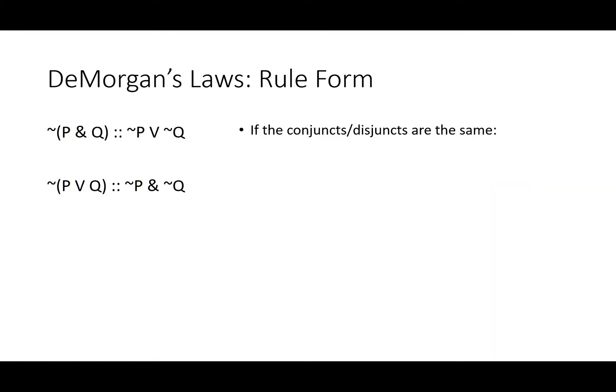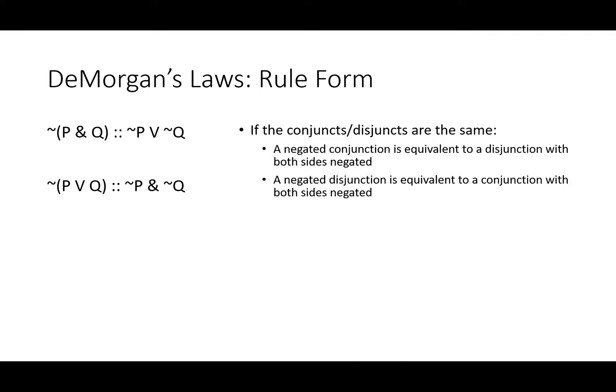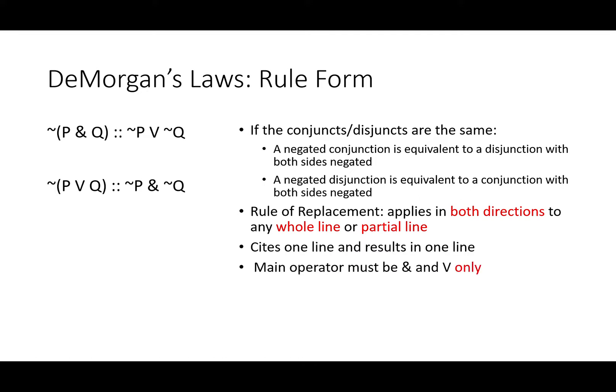These rules only work when the conjuncts or disjuncts are the same. If they are, a negated conjunction is equivalent to a disjunction with both sides negated, and a negated disjunction is equivalent to a conjunction with both sides negated. DeMorgan's applies in both directions to any whole or partial line as a rule of replacement. It cites one line and results in one line. The main operator must be AND and V only, and the negations move to or from the whole to or from the parts.